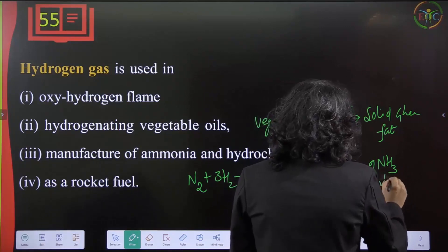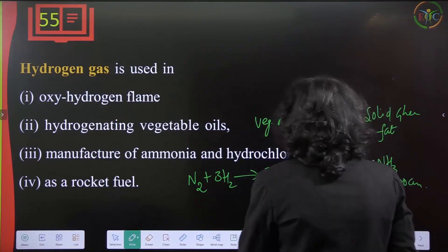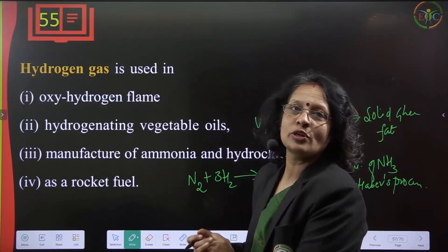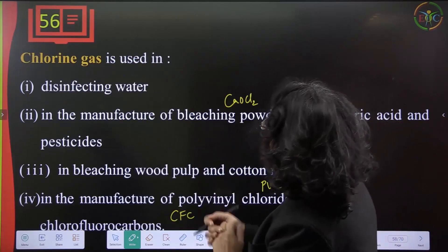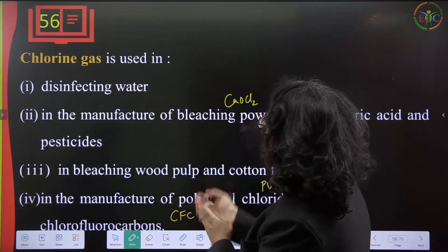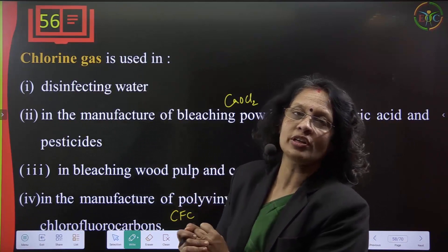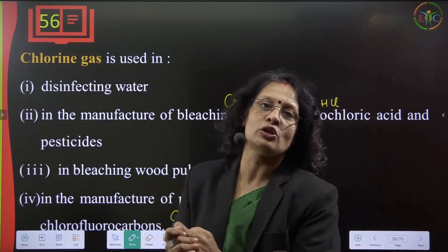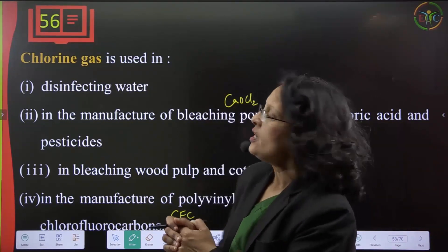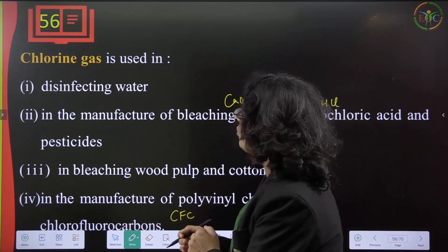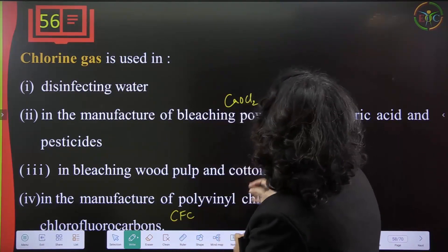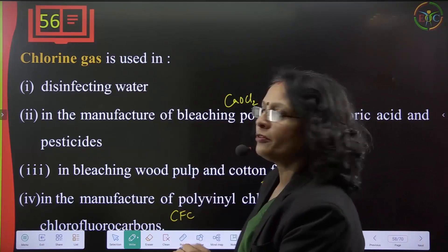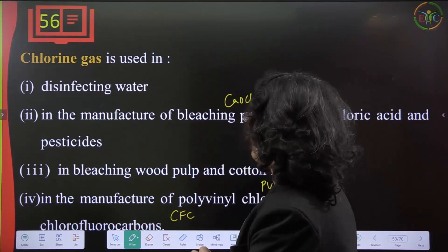Hydrogen gas is also used as a rocket fuel in fuel cells. Chlorine gas is used for disinfecting water — in swimming pools and drinking water supply. It is also used in manufacturing bleaching powder (calcium oxychloride), hydrochloric acid, and different pesticides.